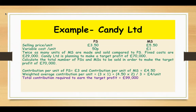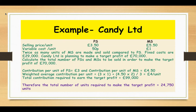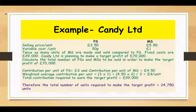The total contribution required to earn the target profit is fixed cost plus target profit: 29,000 plus 70,000 equals 99,000. The total number of units required is 99,000 divided by the weighted average contribution per unit of 4 pounds, giving 24,750 units total — both potato sweets and mango sweets combined.